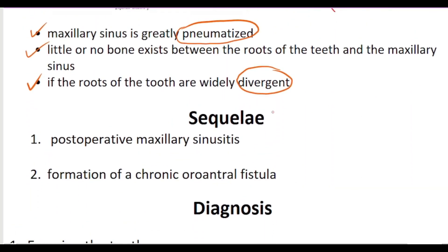Let's talk about the complications. If communication forms and we don't treat it, then there are two main consequences: maxillary sinusitis and chronic oroantral fistula. Once it becomes chronic, it will obviously cause further problems.